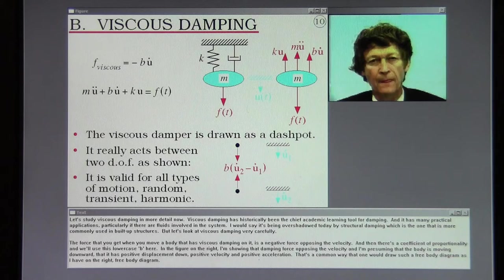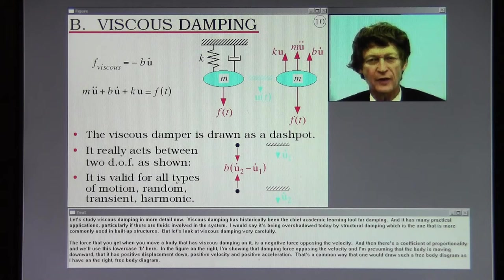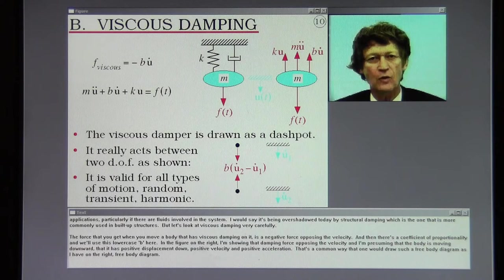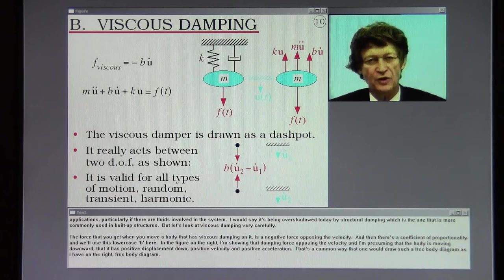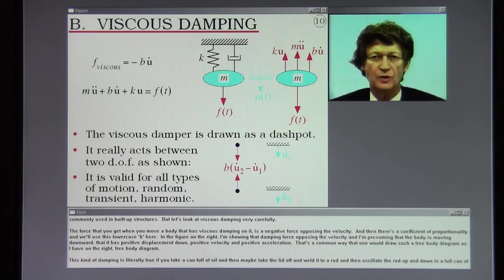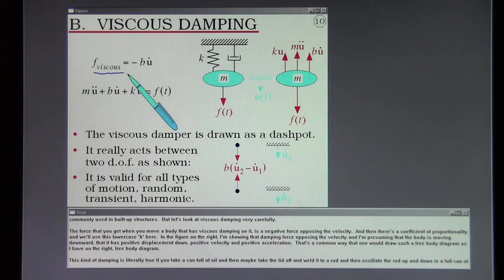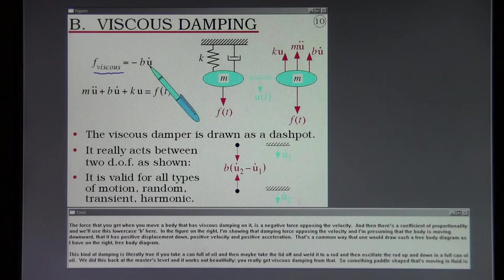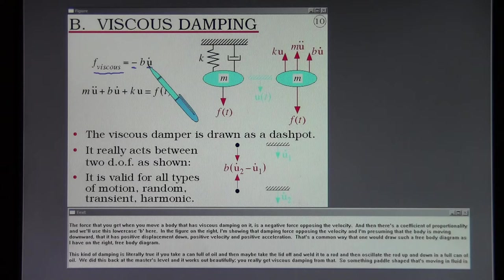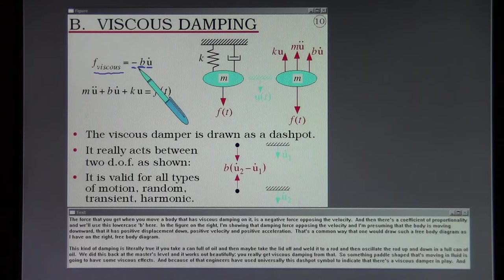Let's study viscous damping in more detail now. Viscous damping has historically been the chief academic learning tool for damping. And it has many practical applications, particularly if there are fluids involved in the system. I would say it's being overshadowed today by structural damping, which is the one that's more commonly used in build-up structures. But let's look at viscous damping very carefully. The force that you get when you move a body that has viscous damping on it is a negative force opposing the velocity. And then there's a coefficient of proportionality. And we'll use this lowercase b here.